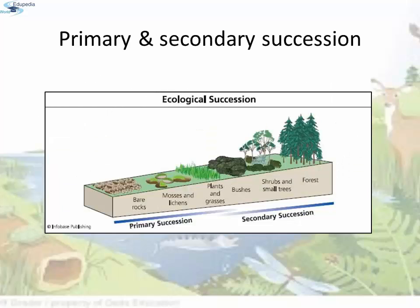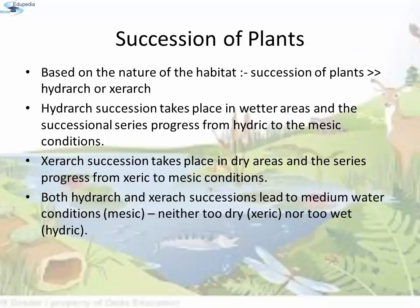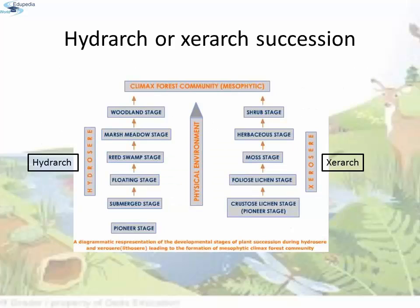This is the diagrammatic representation of primary and secondary succession. Based on the nature of the habitat — whether it is water or very wet areas, or very dry areas — succession of plants is called Hydrosere or Xerosere respectively. Hydrosere succession takes place in wetter areas and the successional series progresses from hydric to mesic conditions. Both Hydrosere and Xerosere successions lead to the medium water condition, i.e. the mesic condition — neither too dry (xeric) nor too wet (hydric).